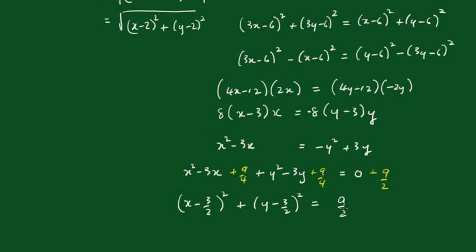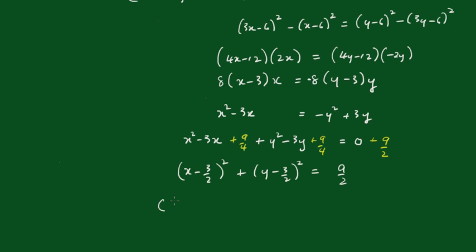So this is a circle, the center of which, the center is 3 on 2, 3 on 2, and the radius is equal to the square root of 9 on 2, and tidied up becomes 3 on root 2, and we rationalize that and we get 3 root 2 over 2 as the radius of the circle.